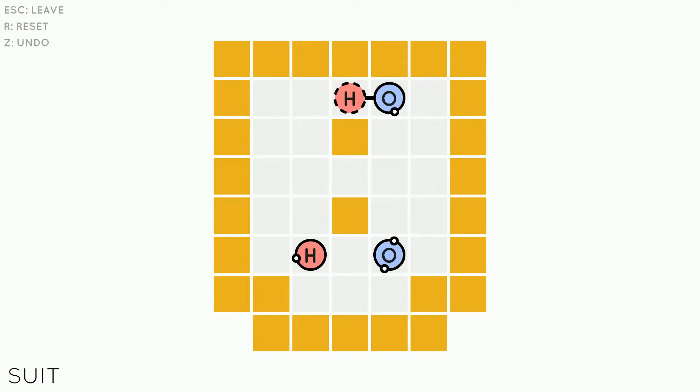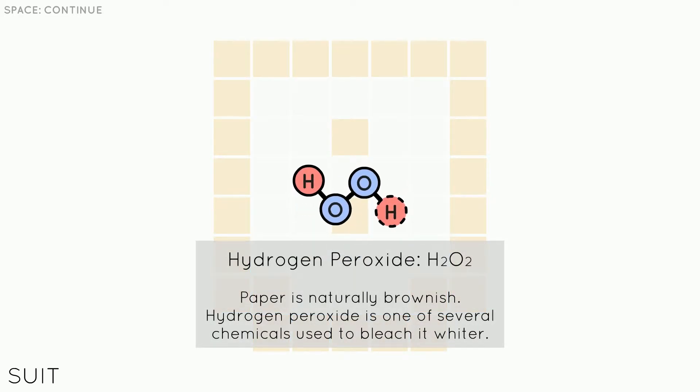All right so hydrogen has one and oxygen has two. No oxygen, this oxygen only has a one, that one has two, that one has one. I don't know why I think talking it out is going to help me in this situation, it's not code. I feel like there's a reason it's called suit so I have to imagine what a suit looks like. It's got arms, legs, tie. Didn't help. Well that's a start. Aha. More hydrogen peroxide. Paper is naturally brownish, hydrogen peroxide is one of several chemicals used to bleach it whiter. Interesting.